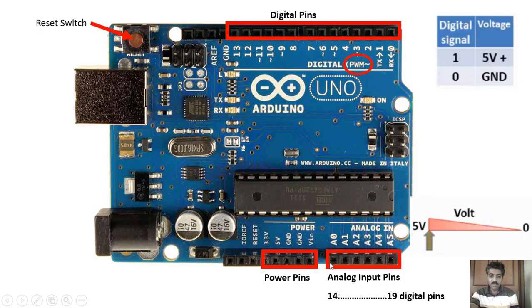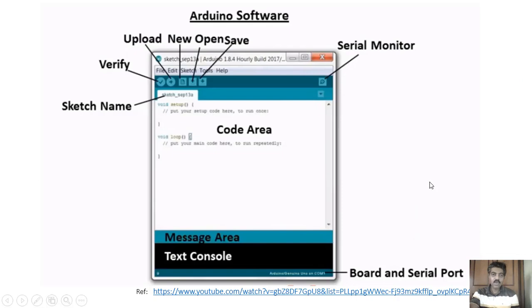In total, how many pins can be used as digital pins? There are 14 digital pins (0 to 13) plus 6 analog pins used as digital, giving a total of 20 pins that can be used as digital pins, numbered from 0 to 19.